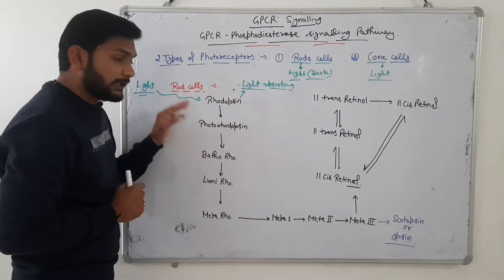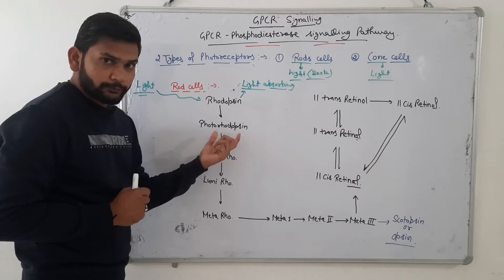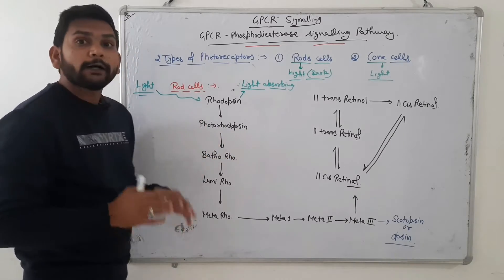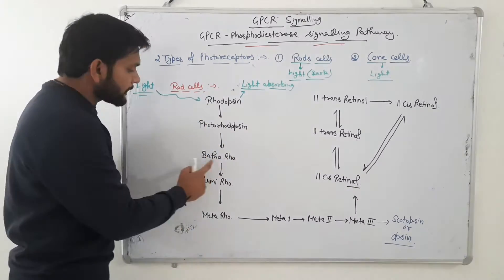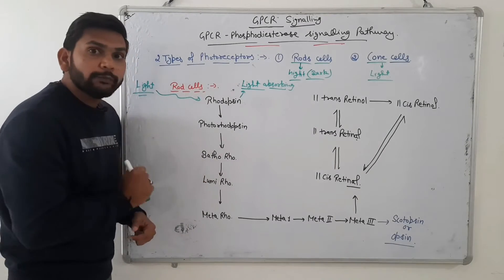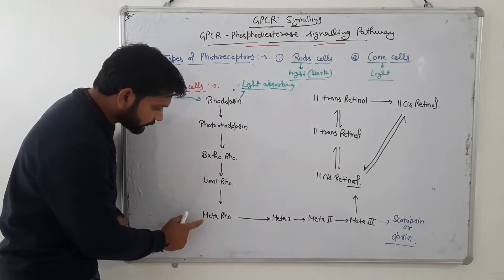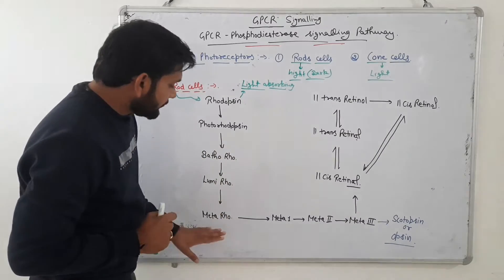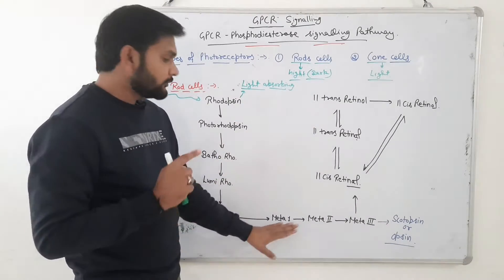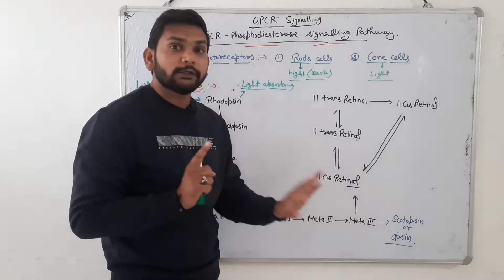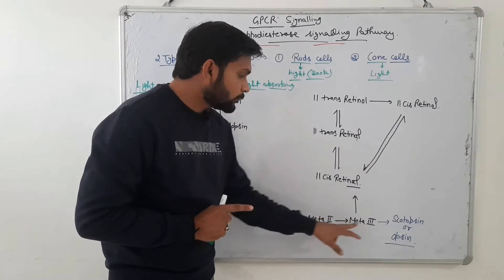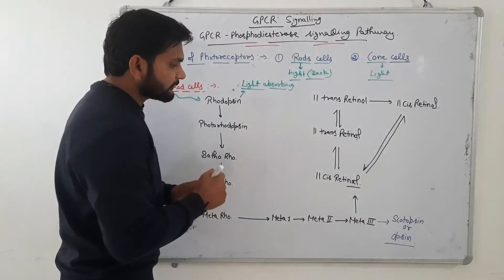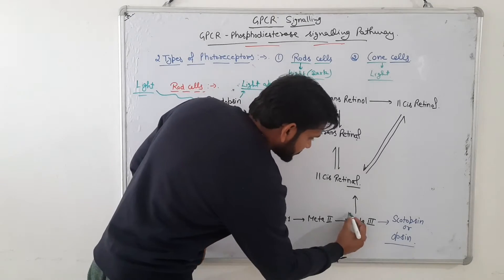Rhodopsin is then converted into photorhodopsin. Photorhodopsin is converted into bathorhodopsin. Bathorhodopsin is converted into lumirhodopsin. Lumirhodopsin is converted into metarhodopsin. Then metarhodopsin converts into meta-1 rhodopsin, meta-1 converts into meta-2 rhodopsin, and meta-2 converts into meta-3 rhodopsin — and this step is a very important step.